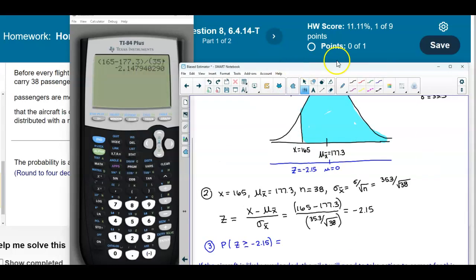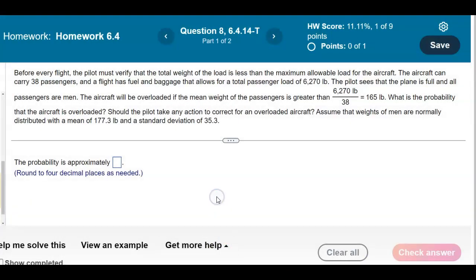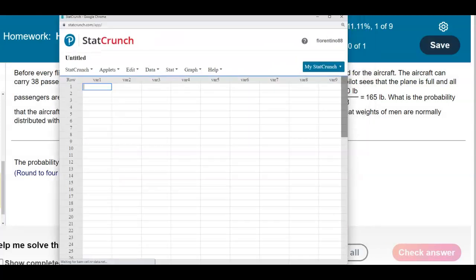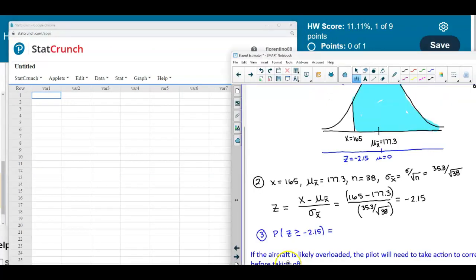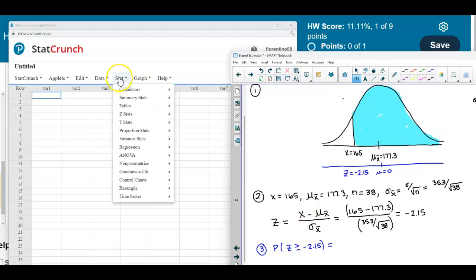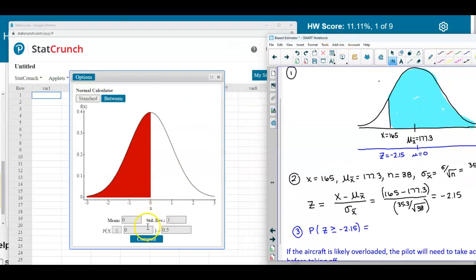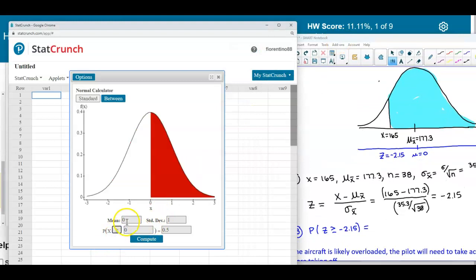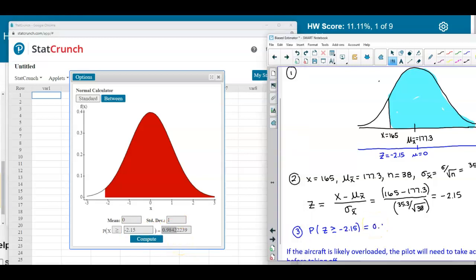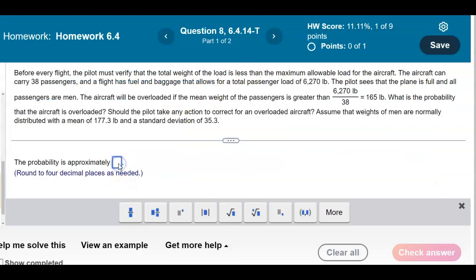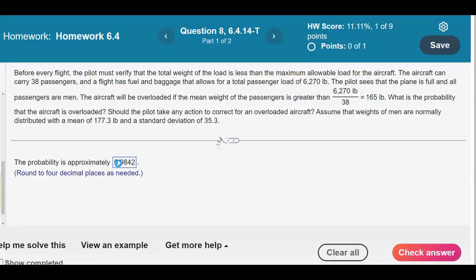Let's do that on StatCrunch. Using stat calculators and then down to the normal distribution, we want to make sure that our inequality is pointing to the right. We have a mean of zero and a standard deviation of one. Put in the z-score of negative 2.15, and rounding the probability to four decimal places is 0.9842.